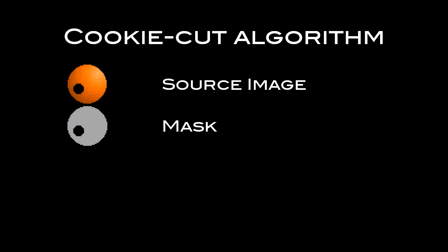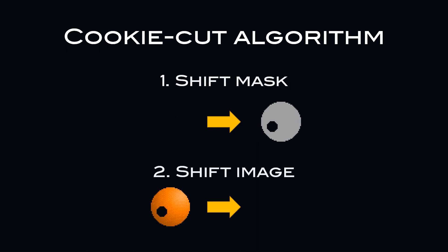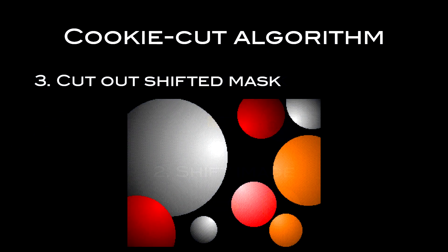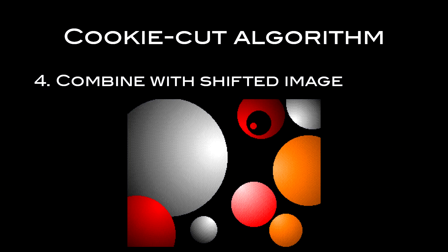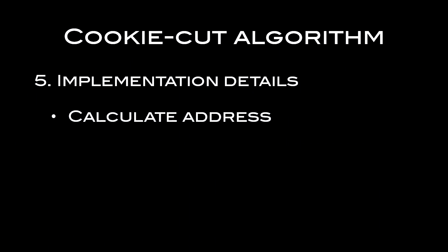The cookie-cut algorithm requires three things: a source image, a mask of the source image, and a background image. First, the CPU shifts the mask; then the CPU shifts the image; next, it cuts out the shifted mask from the destination image; and last, it combines the shifted bob image with the destination image. To implement this, the first thing needed is to convert X and Y coordinates to an address in memory. For the Y position, take the Y coordinate and multiply it by the width of the bitmap in bytes. For the X location, take the X coordinate, divide by 8, and round down to the nearest multiple of 4 to get the correct address to blit to.